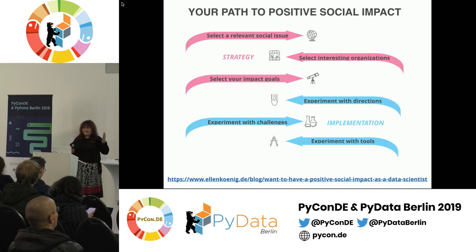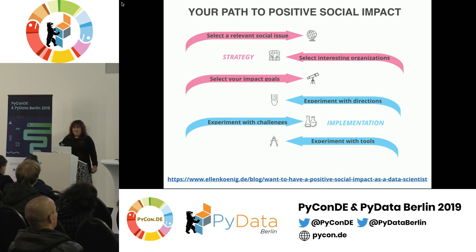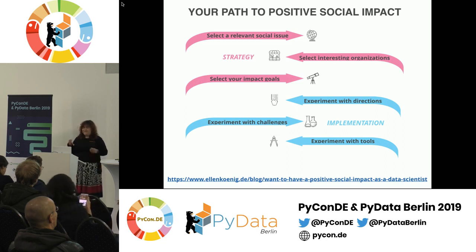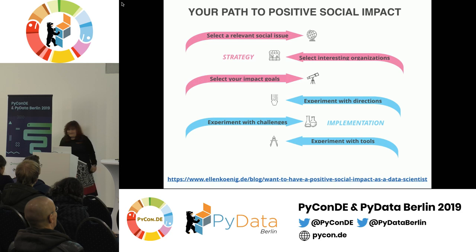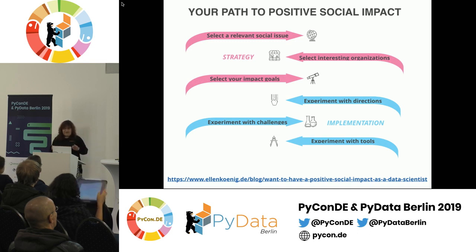There's a strategy part to this, which is all about figuring out what kind of impact you want. And then there's an implementation part, which is more about experimenting — now that you know what you want to achieve, how can you actually do that? I use the word 'experiment' very deliberately here, because data science in particular is a very new field and it's even newer in the social sector. There's a lot of unknowns; there's not a true path yet.